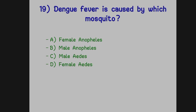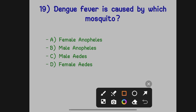The next question: dengue fever is caused by which mosquito? Option A: Female Anopheles. Option B: Male Anopheles. Option C: Male Aedes. Option D: Female Aedes. The correct answer is Option D, female Aedes — this is the mosquito which causes dengue fever in humans.